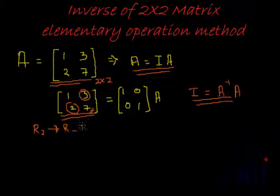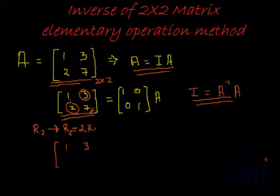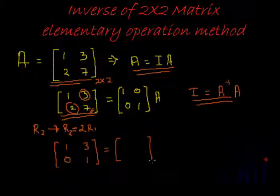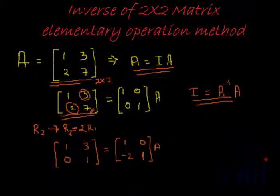The first operation is R2 becomes R2 minus 2 times R1. Row 1 remains the same. For R2: the first element becomes 2 minus 2×1 = 0, and the second element becomes 7 minus 2×3 = 1. We apply the same operation to the identity matrix on the right-hand side, giving us [1, 0; −2, 1] on the right.